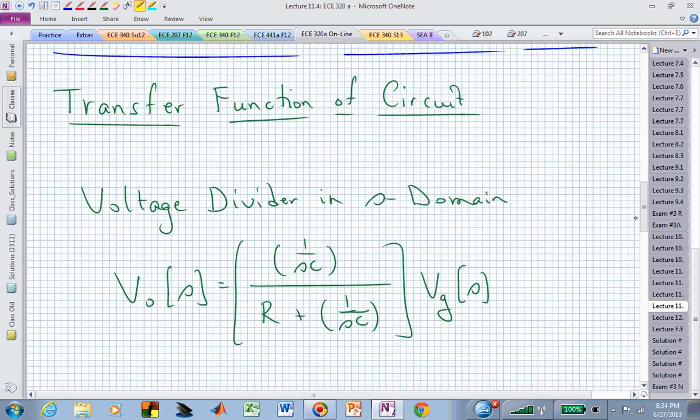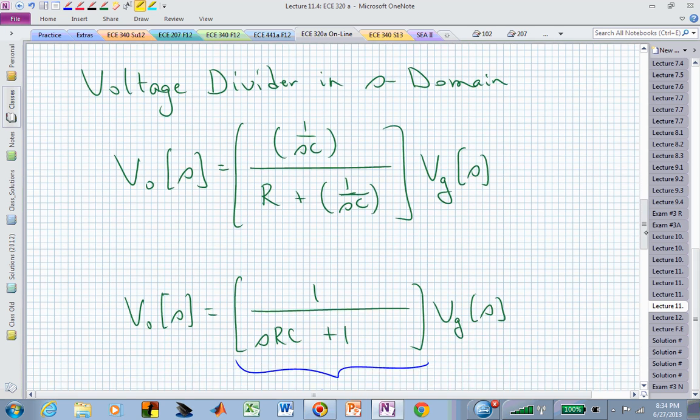In our case, we can find that by a simple voltage divider in the S domain. We have the impedance of the capacitor divided by the sum of the two impedances, the resistor and the capacitor.